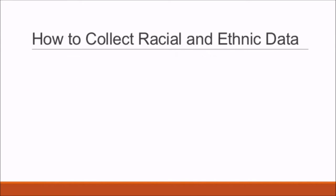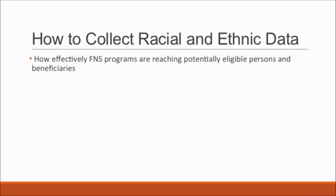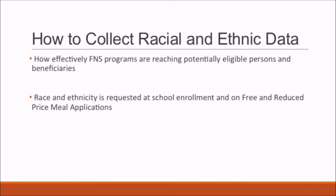The purpose for collecting race and ethnicity information is to determine how effectively FNS programs are reaching potentially eligible persons and beneficiaries. Typically, race and ethnicity is requested at school enrollment and on free and reduced price meal applications. Provision of this information is voluntary. Alternatively, staff must make a visual observation of ethnicity and race and inform the applicant that this visual identification will be recorded in the data system. Children must not be surveyed, and applicants must be assured that the information is used for statistical purposes only and has no effect on eligibility criteria.